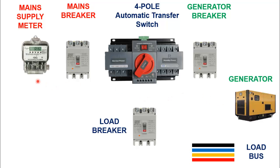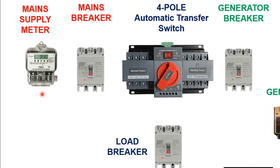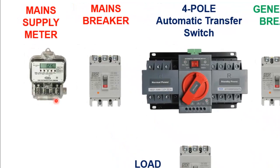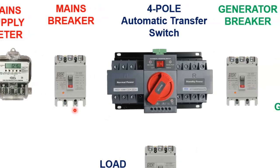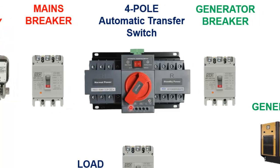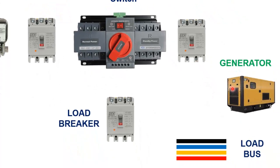Let's start by placing the main components. This is the three-phase energy meter showing main supply. This is a three-pole circuit breaker for main supply. This is the automatic change over switch. This is a three-pole circuit breaker for generator. And this is the output breaker for load. And these are our three-phase plus neutral load bus.